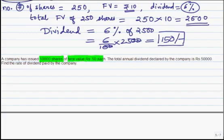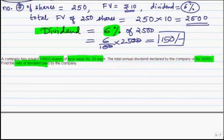A company has issued 10,000 shares with a face value of Rs 50 each. The total annual dividend declared by the company is Rs 50,000. In the earlier problem the percentage of dividend was given; here the actual amount of dividend is given as Rs 50,000, and we need to find the rate of dividend. In the previous problem the rate was given and amount was unknown; here the amount is given and the percentage is unknown.